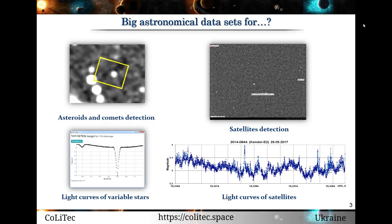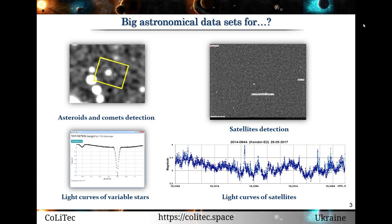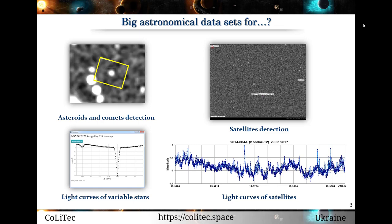As the resolution of cameras and telescopes has increased over time, allowing for the registration and analysis of more detailed images of the night sky, this process directly impacts the ability to detect and study various objects in space. Some of them are solar system objects, variable stars, asteroids, comets, near-earth objects, satellites, and others.